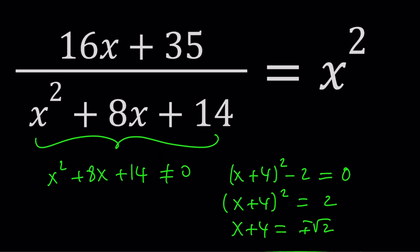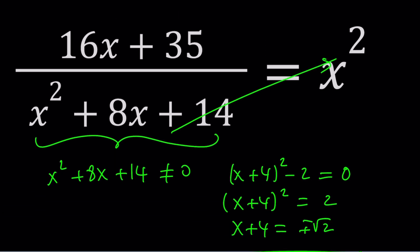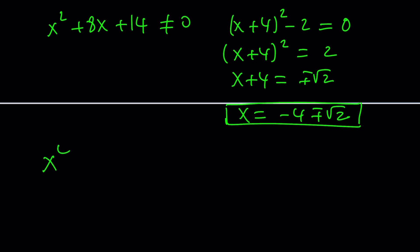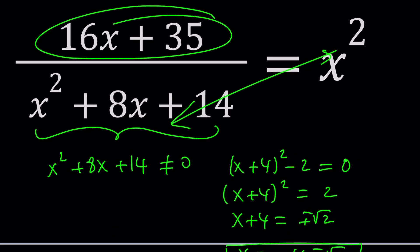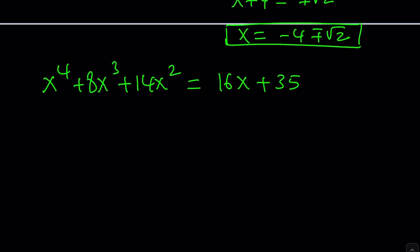This can just turn into a polynomial equation. So let's go ahead and start by cross multiplying. That gives us the following: x to the fourth plus 8x cubed plus 14x squared. So I'm distributing the x squared, and then I have 16x plus 35 on the other side of the equation, right? Cross multiplication gives you this. Now we can go ahead and put everything on the same side to get a full quartic.